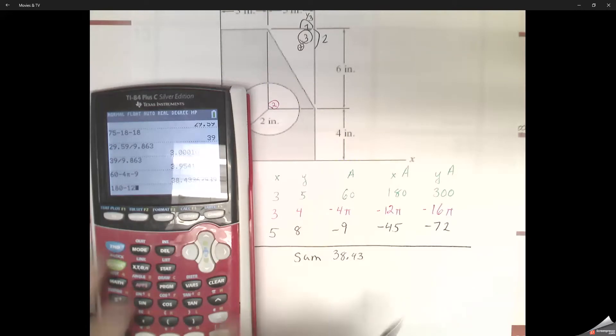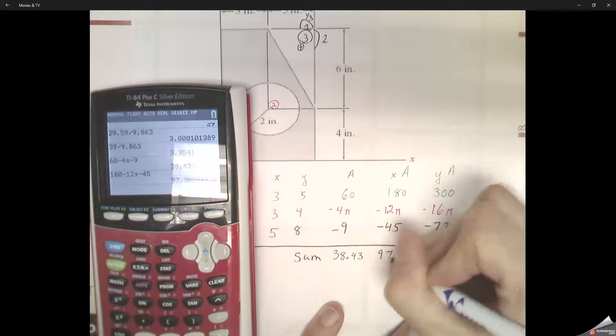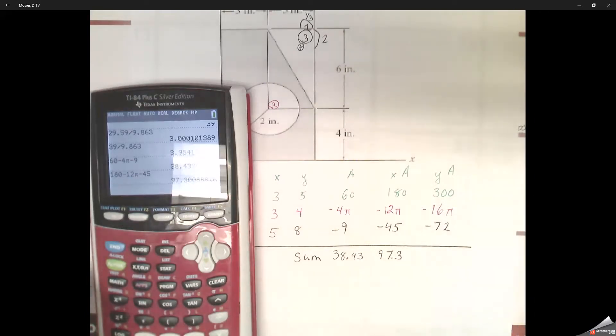Then we've got 180 minus 12 pi minus 45. That gives us about 97.3. Then we've got 300 minus 16 pi minus 72.